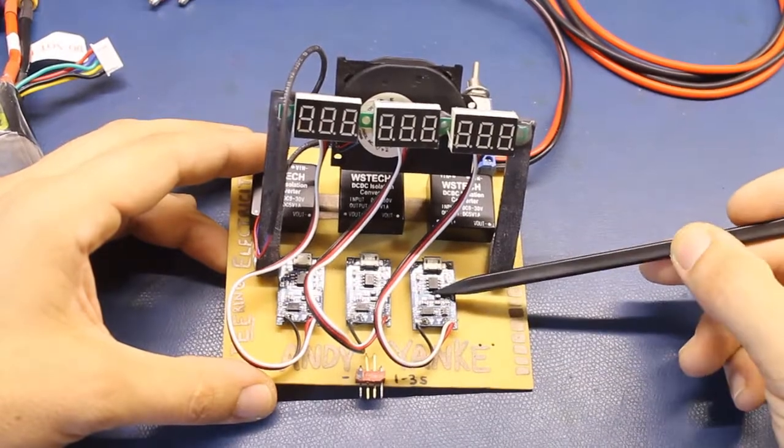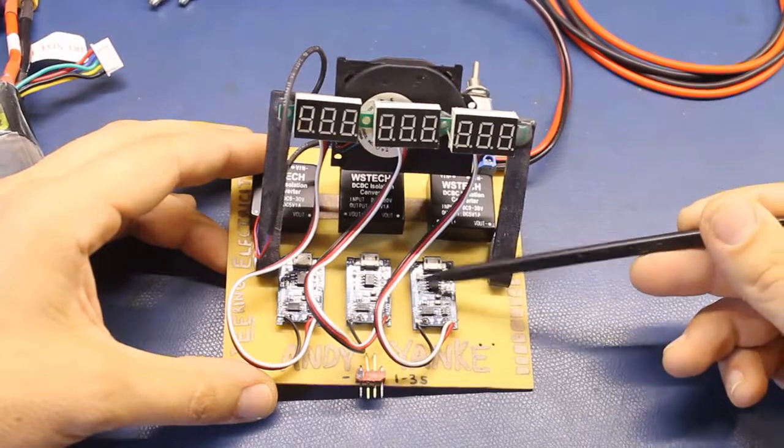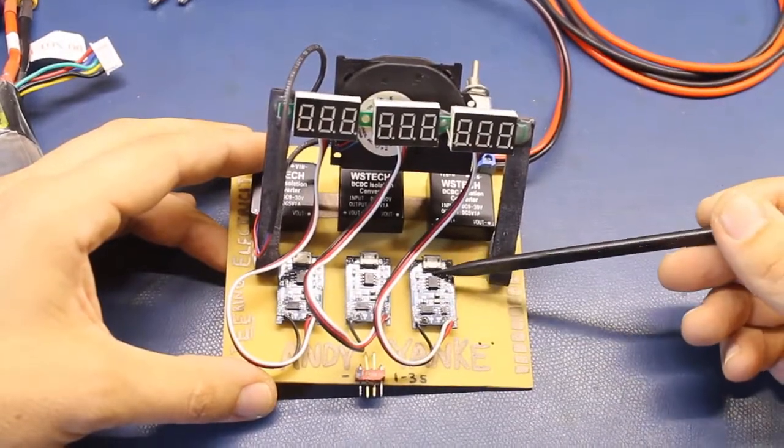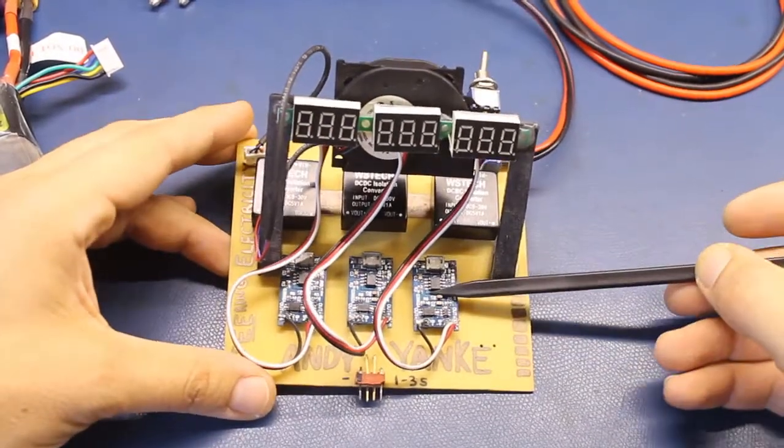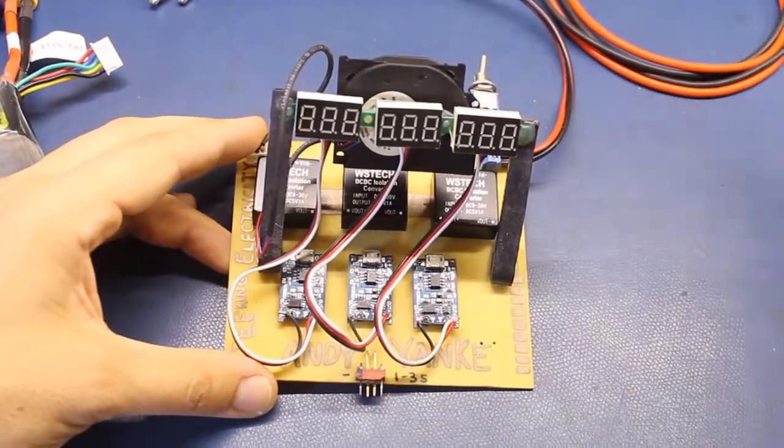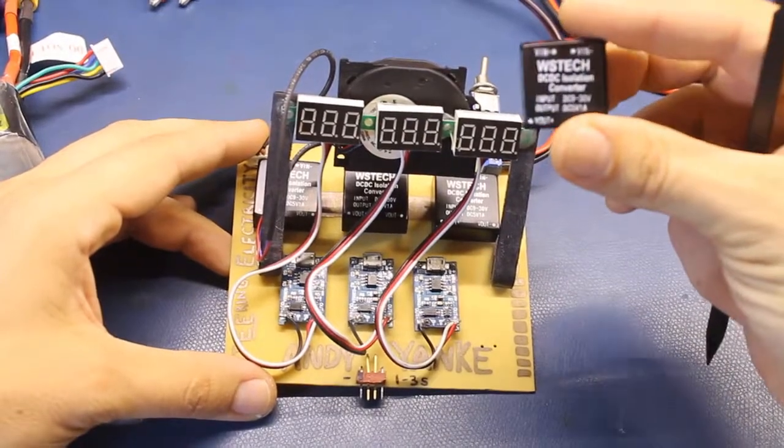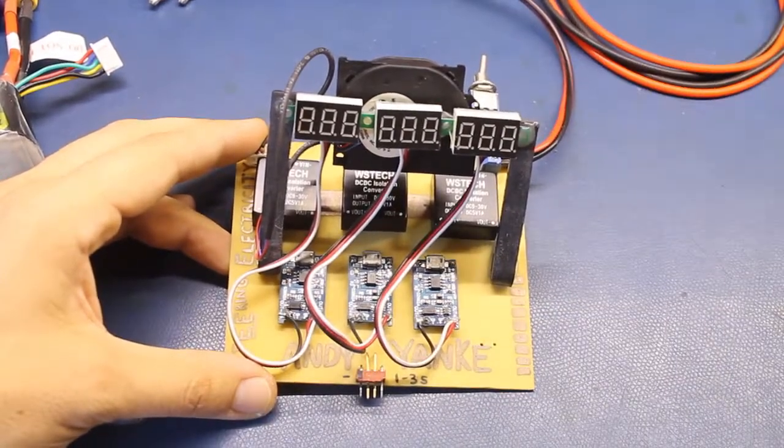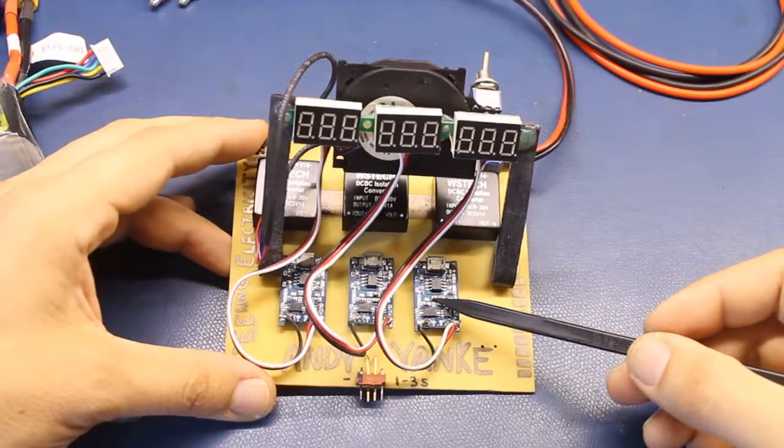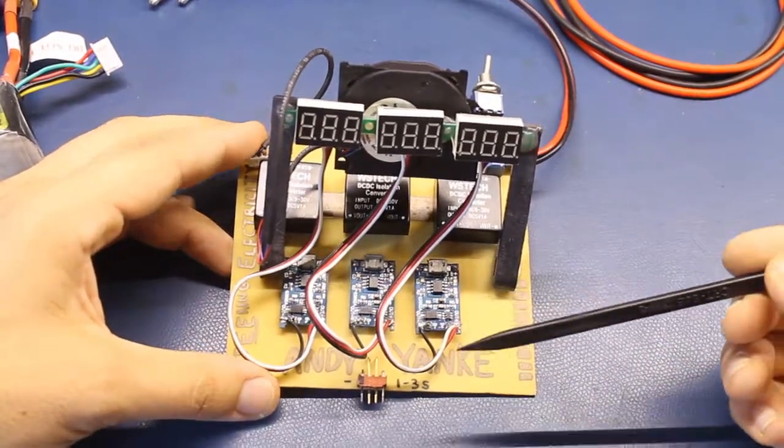So I knew that if these output 5 volts at 1 watt, give or take, they have some loss in them. I was thinking I need at least a 5 watt DC to DC converter to run them. That's when I ordered these Mastec 5 watt DC to DC converters. They're 9 to 30 volts in, 5 volt 1 amp out, which was perfect for this and what I was doing. So I ordered a few, got them, loved them, ordered a bunch more.